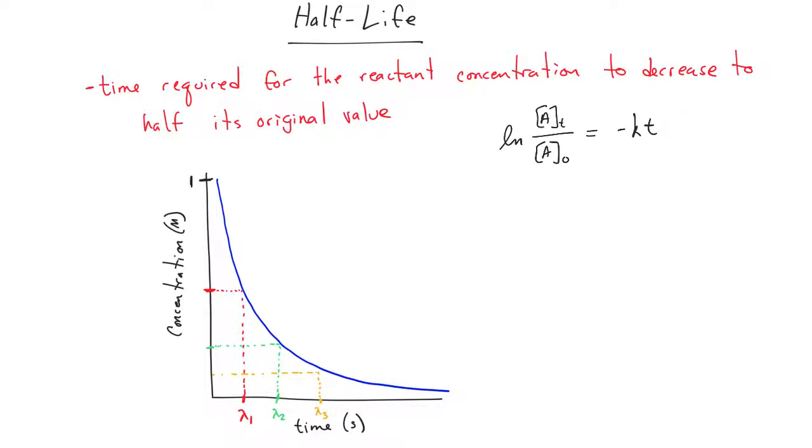The thing to remember is that the concentration of A at time T is always going to be one-half concentration of A at time zero, or the initial concentration. And so from that, we get the natural log of one-half is equal to negative KT.